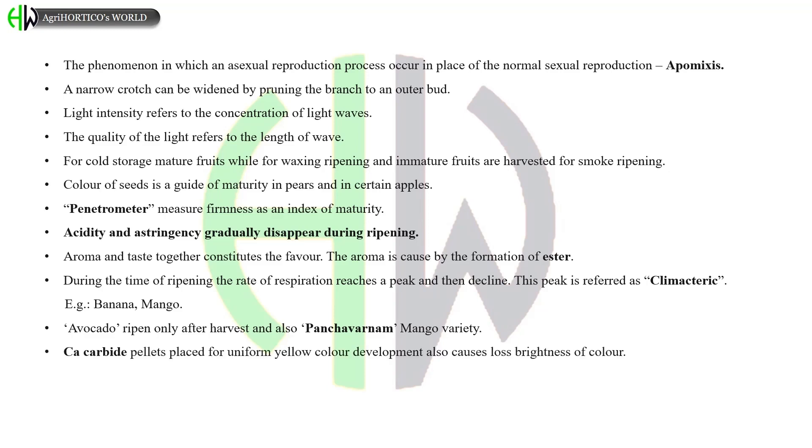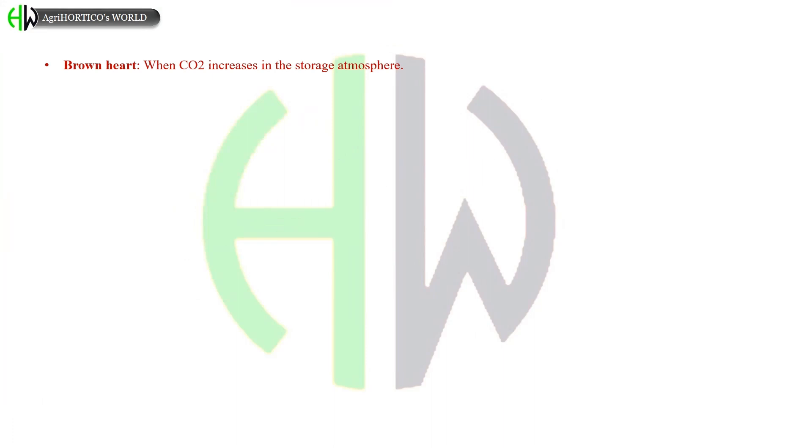Calcium carbide pellets placed for uniform yellow color development also causes loss of brightness of color. Ethrel is the ripening hormone most commonly employed for artificial ripening of fruits. Pre-cooling is done to make the fruits to acclimatize for the low temperature in cold storage chamber. Brown heart occurs when carbon dioxide increases in the storage atmosphere. Hot dry wind at blossoming time prevents pollen germination. The fruits of sweet orange are juicy and thin-skinned if sour orange is used as a root stock. Exposing of fruits to gamma ray is referred as irradiation.